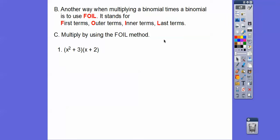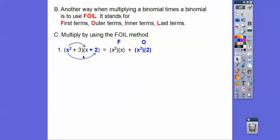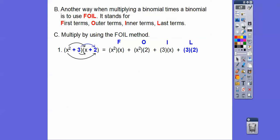So here we have a binomial times a binomial. Let's do F — first times first. Then O — the outer bookends, so x squared times 2. Then inner times inner — 3 times x. And then last times last — 3 times 2. So x squared times x is x cubed, plus 2x squared, plus 3x, plus 6. None of those are like terms, so that's our answer.